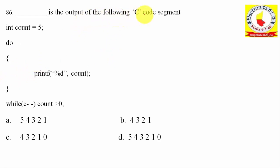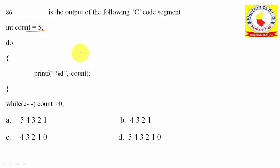86th question asks about the output of a C code segment. An integer variable 'count' is initialized to 5. The loop uses do-while, which is a post-checking loop — it executes first, then checks the condition. Post-decrement (count--) means: first use the value, then decrement it.